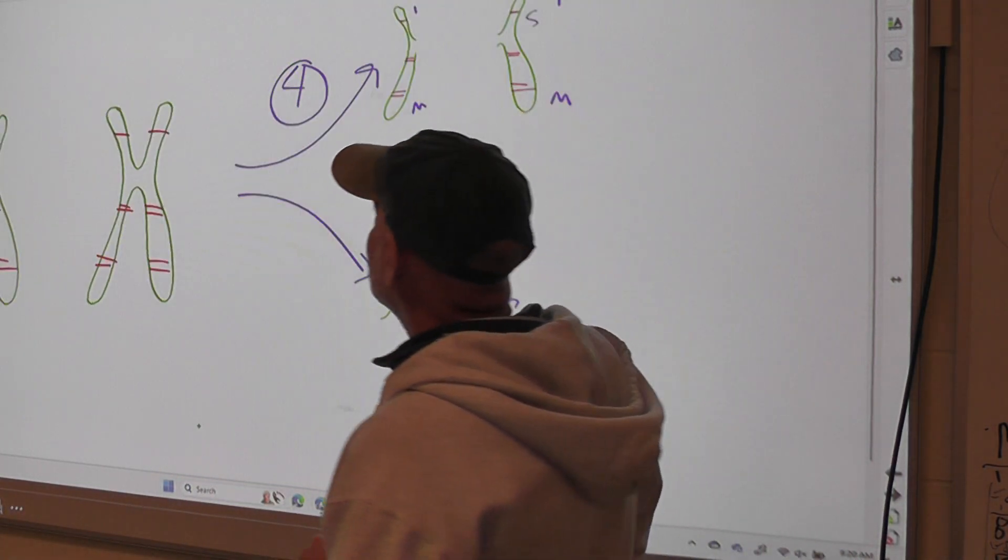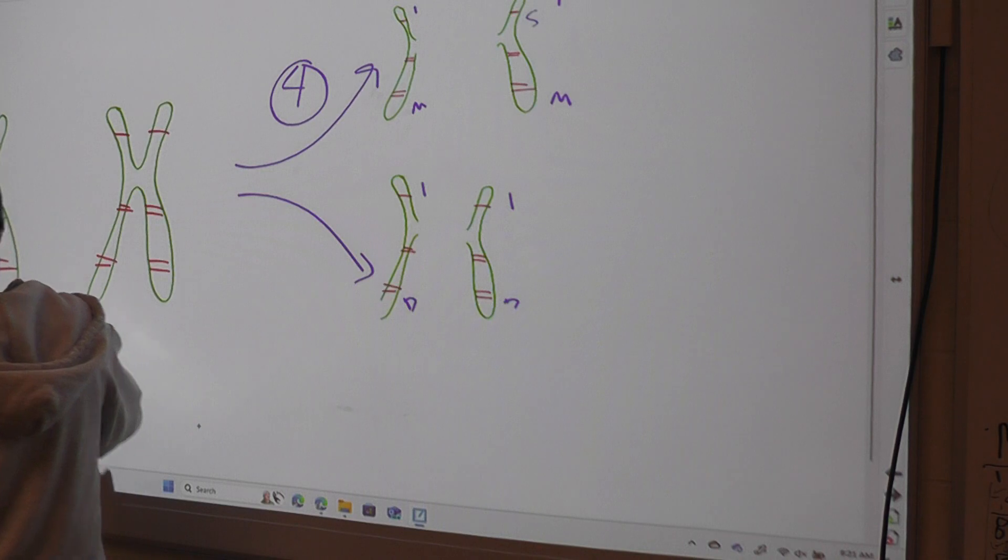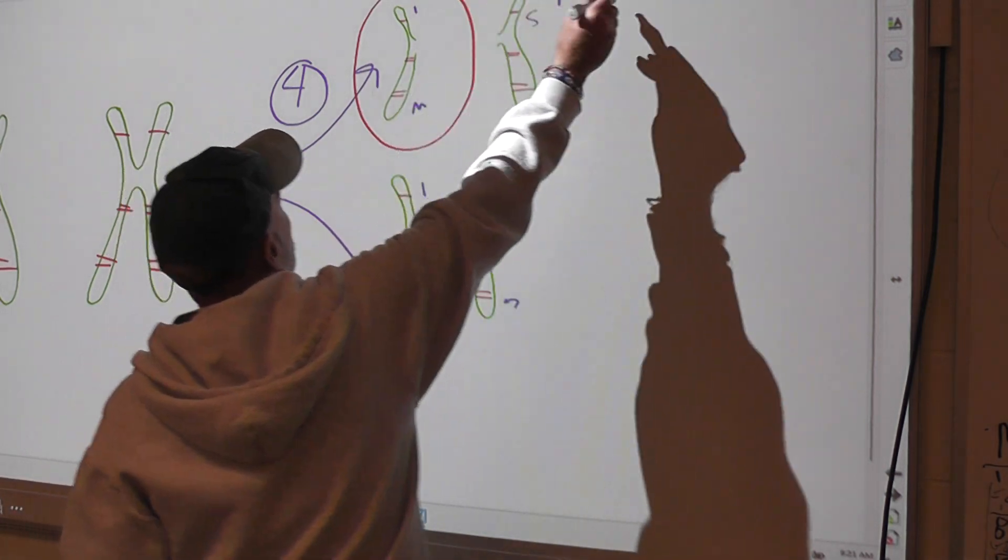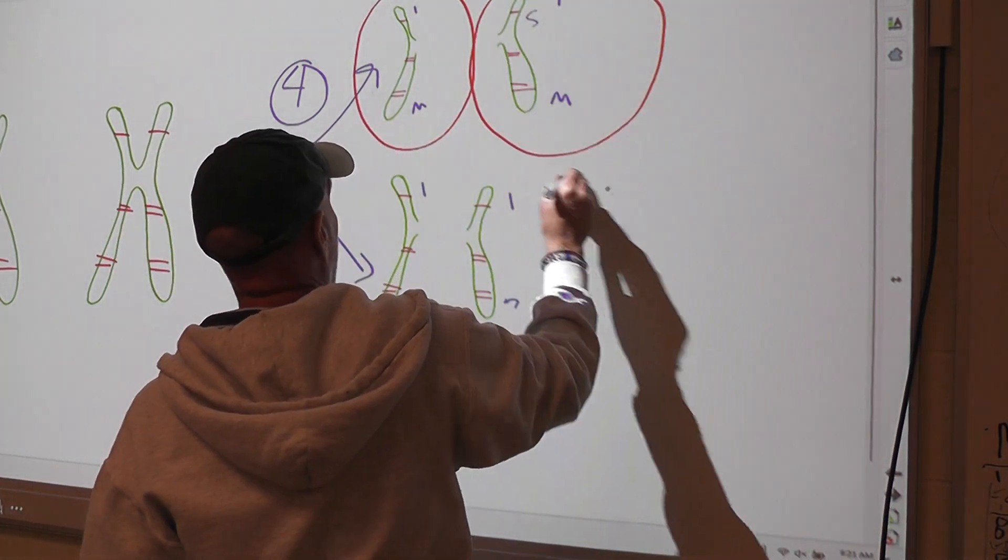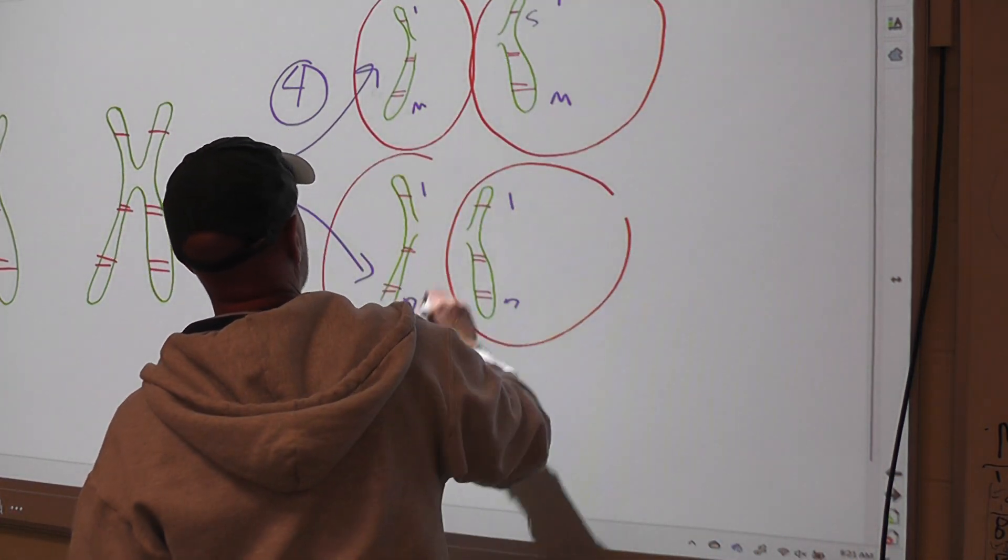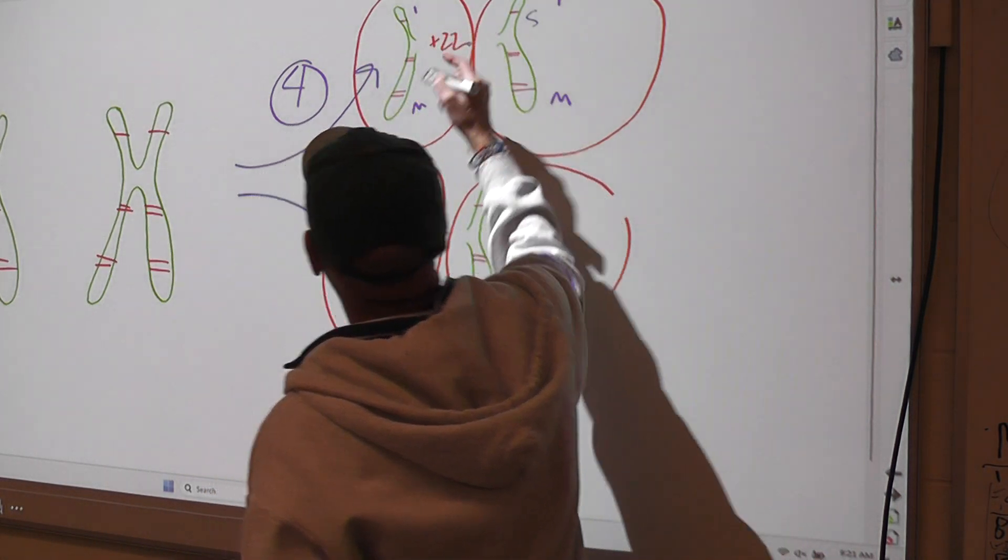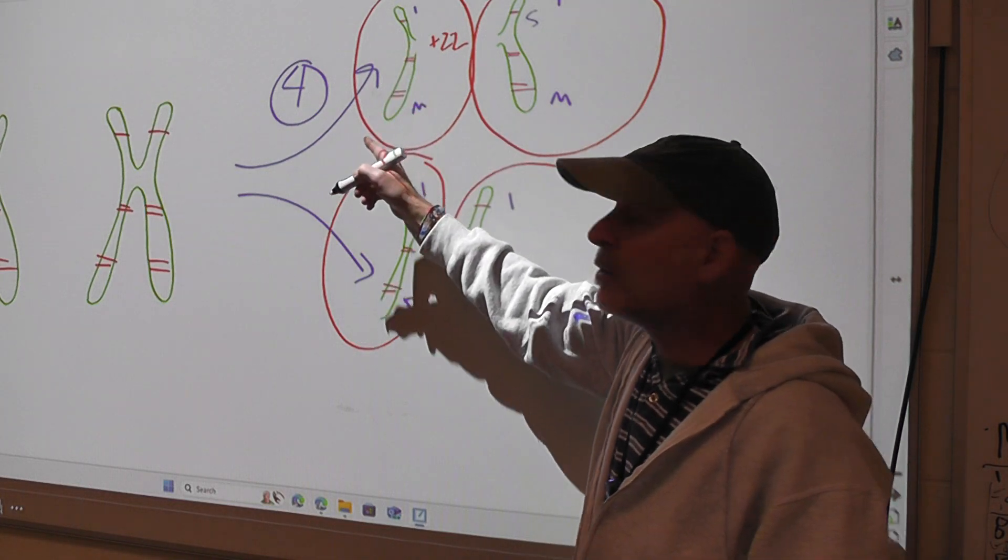And then the last stage is you take those two piles and you cut the chromosomes in half, and you're going to end up with four piles that represent cells. Each pile is going to have 23 unreplicated chromosomes.